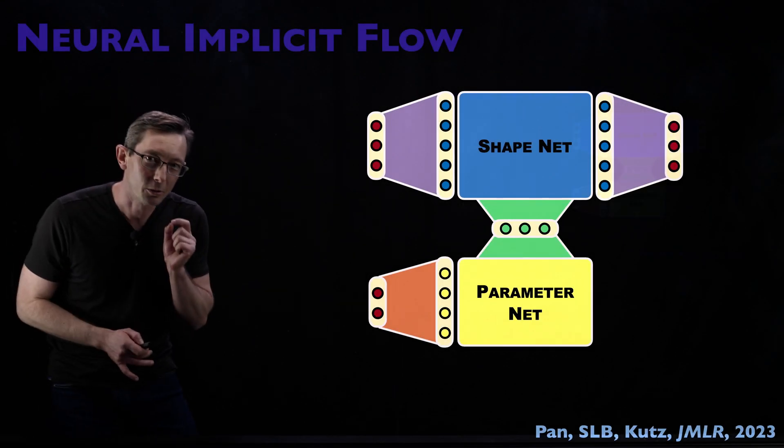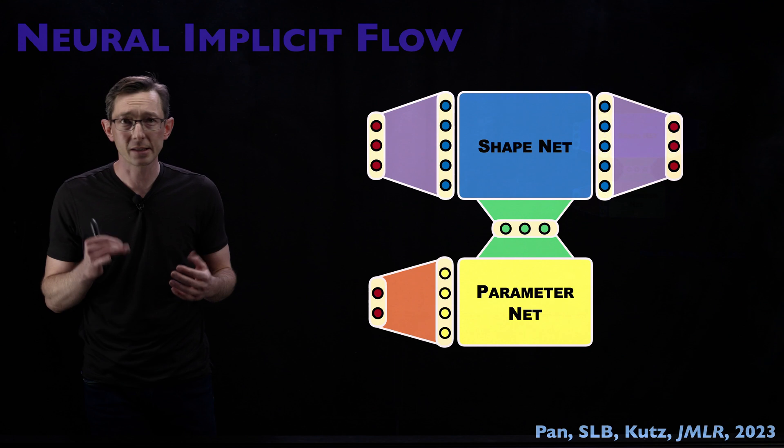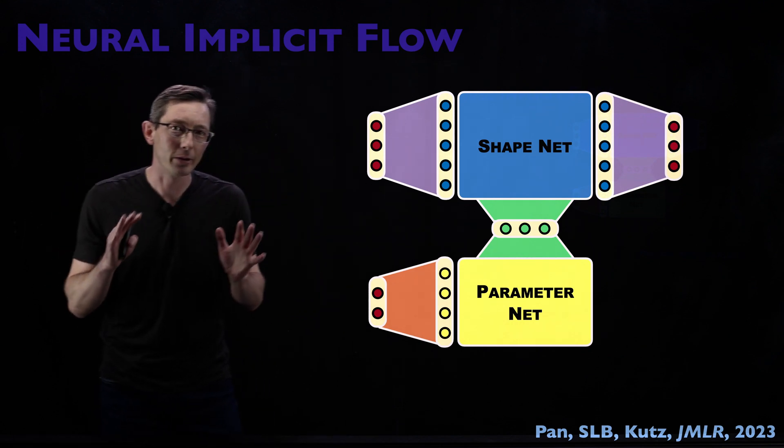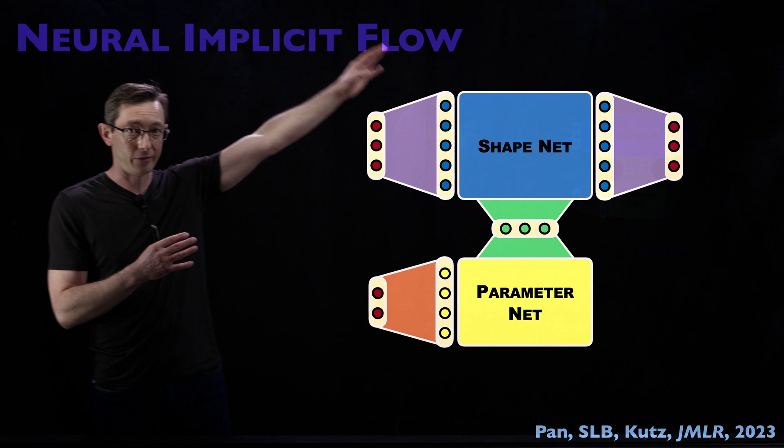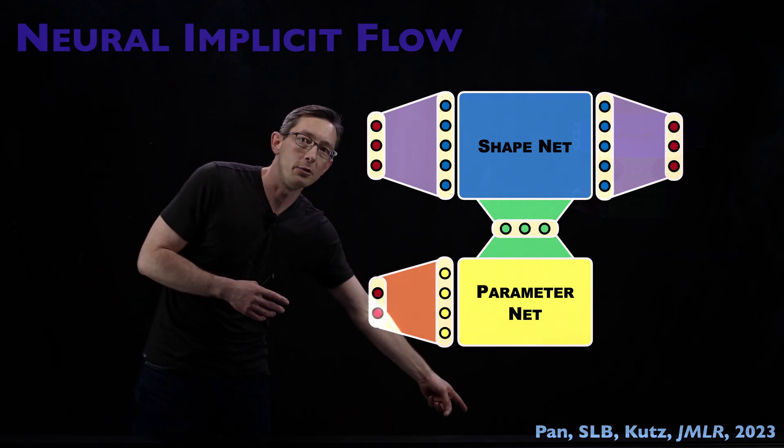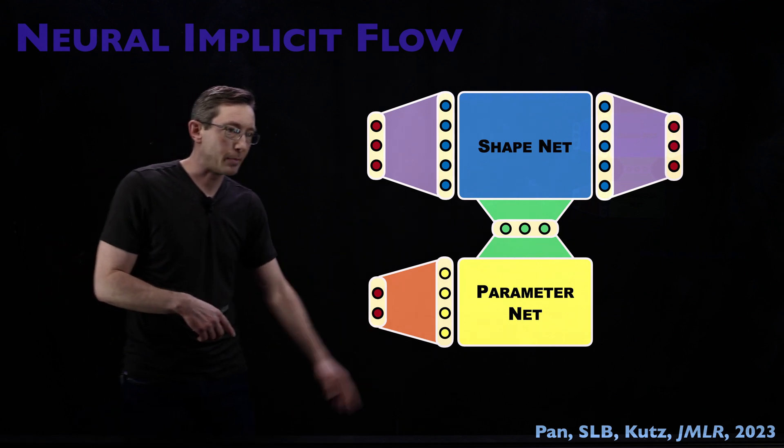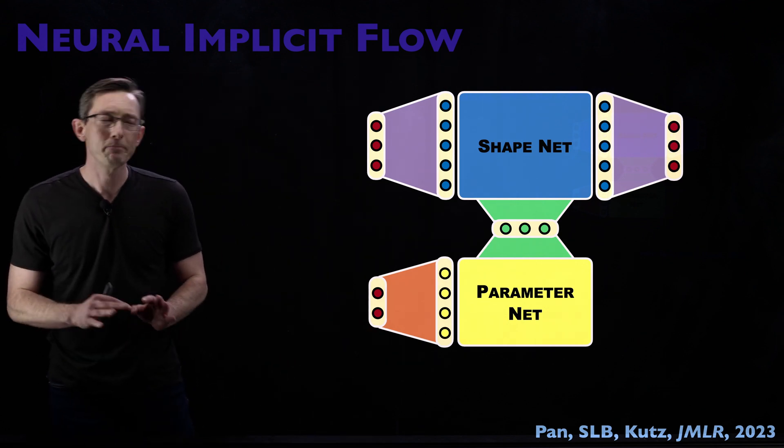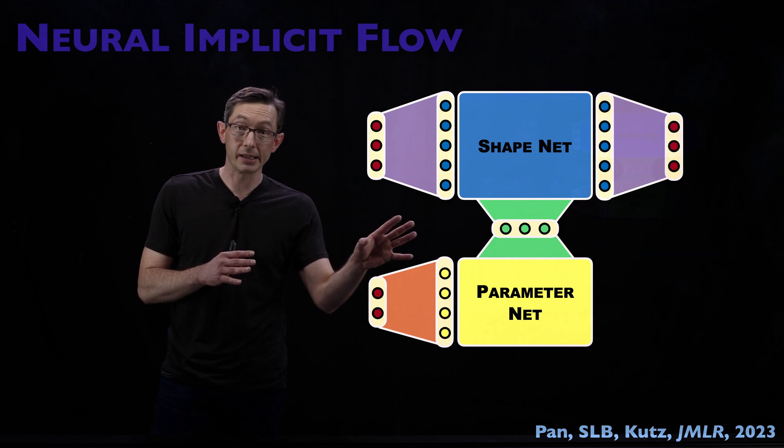Welcome back. So we've been talking about operator learning methods with neural networks, and today I'm going to talk through this method called Neural Implicit Flow developed by Xia Wu Pan when he was a postdoc working with me and Nathan Kutz. This is a JMLR paper from 2023, and this is a picture of the Neural Implicit Flow architecture.